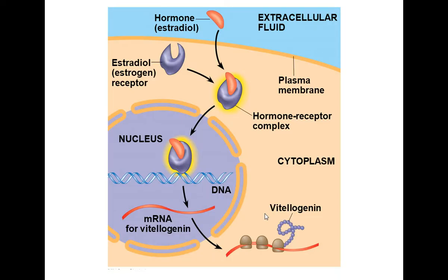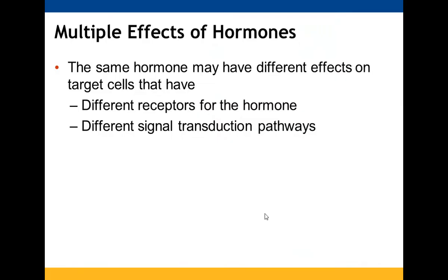Estradiol — the same as estrogen — enters through the cell membrane with a protein helper. That complex enters the nucleus and impacts transcription, for example for vitellogenin. Hormones can act in multiple ways: there may be multiple receptors for the same hormone, or multiple signal transduction pathways the hormone can act on.